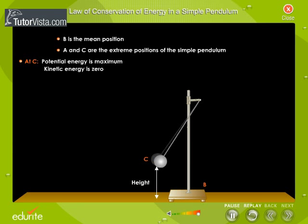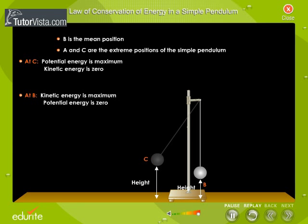When the pendulum moves towards position B, its velocity increases. Due to increase in velocity, its kinetic energy increases. That is, potential energy gets converted to kinetic energy. At position B, it has maximum kinetic energy and zero potential energy, as it is at its lowest position.